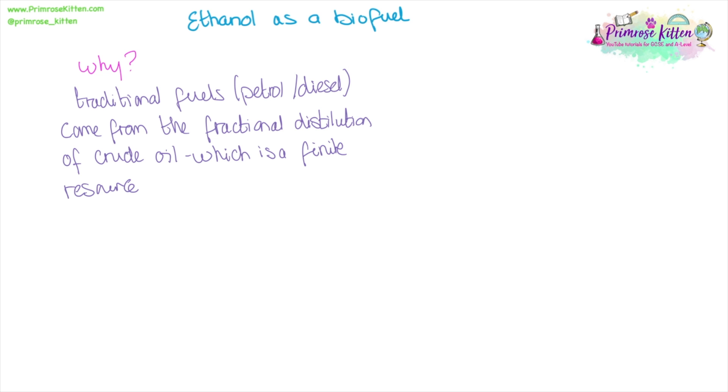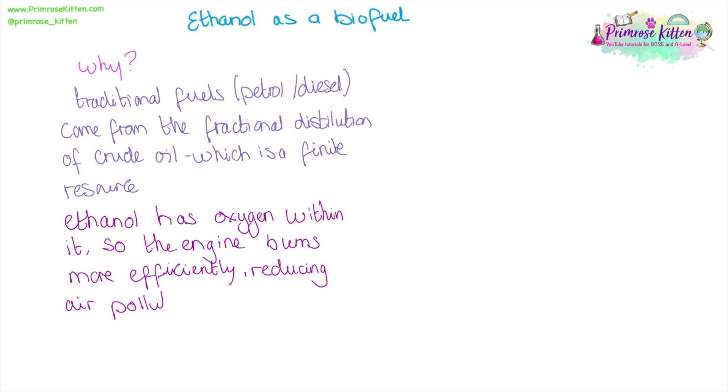Ethanol can be used as a biofuel. Traditional fuels such as petrol or diesel come from crude oil, and crude oil is a finite resource, meaning we are going to run out of it eventually. If you think about the structure of ethanol, it has oxygen within it, so an engine burning ethanol will burn more efficiently, reducing air pollution.